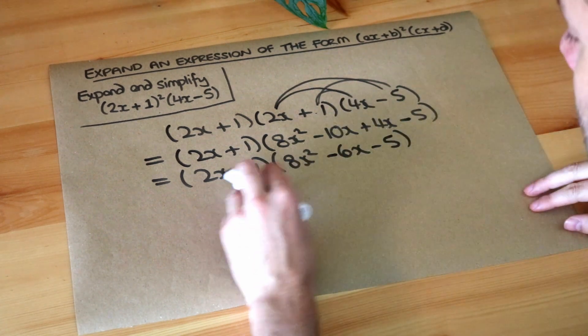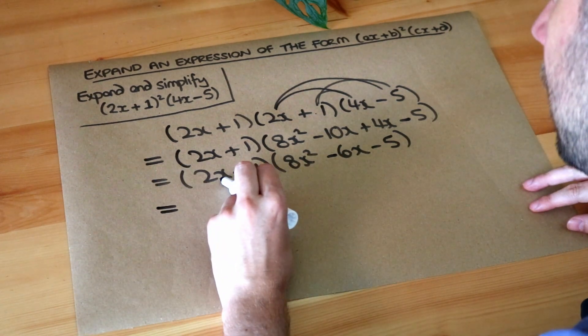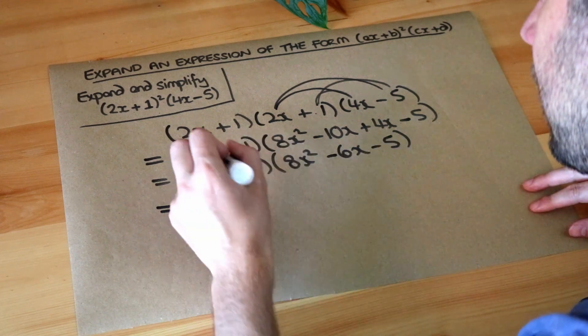And now we've just got two brackets. So we're going to multiply this bracket by this bracket. So as before we do each thing in the first bracket multiplied by each of the things in the second bracket.